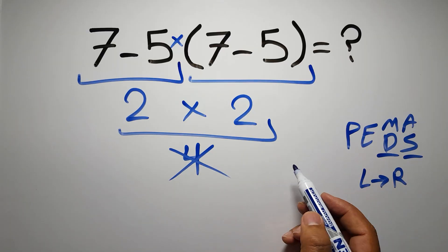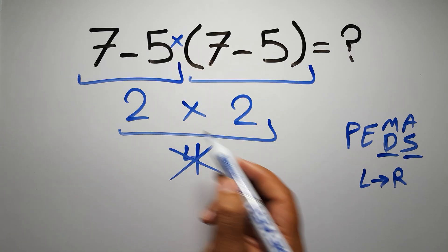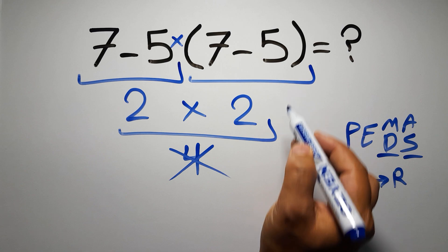so according to the PEMDAS, first we have to do this parenthesis, then this multiplication, and finally this subtraction. If we do this subtraction before this multiplication or this parenthesis, it is wrong,